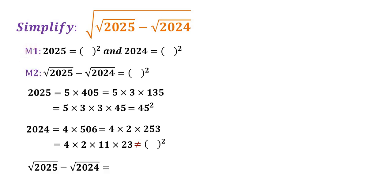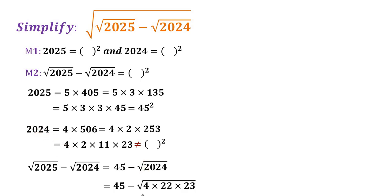Let's focus on square root of 2025 minus square root of 2024. Since we know from the factorization that 2025 is 45 squared, square root of 2025 can be written as 45. So we have 45 minus square root of 2024. From the factorization of 2024, this can be written as 45 minus square root of 4 times 22 times 23, which equals 45 minus 2 times square root of 22 times square root of 23.